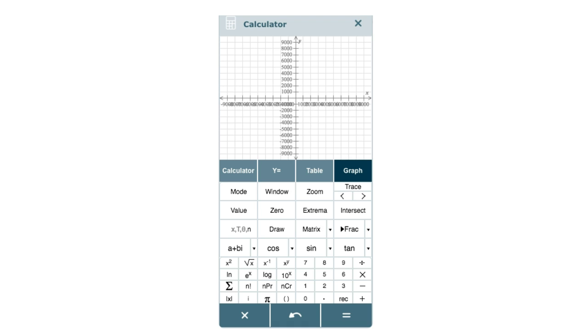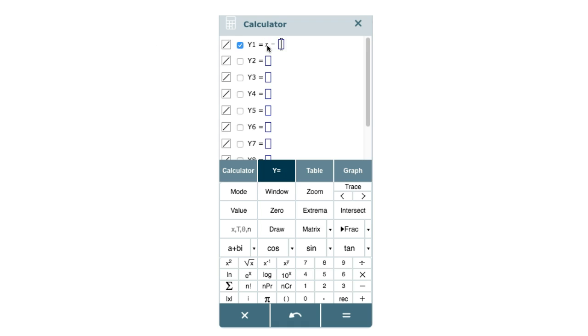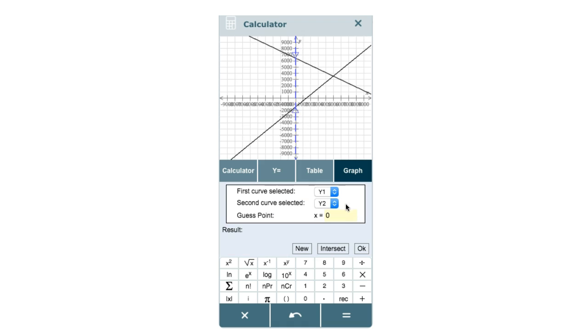Let's put our two equations into the Y equals area. And now we hit intersect where it gives us our solutions for X and Y, which are X equals 5,000 and Y equals 3,500.